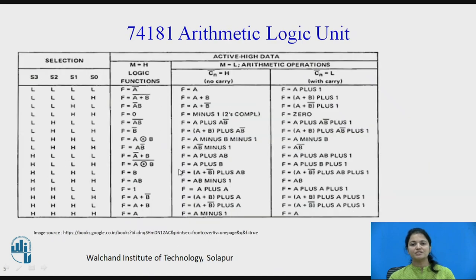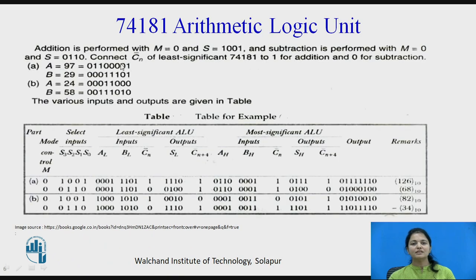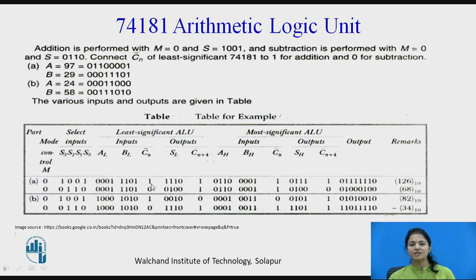In this operation, A plus B is performed. For the lower nibble, we put Cn-bar equal to 0. The table shows: mode 0 for arithmetic, selection 1, 0, 0, 1 for addition. The lower nibble of A and lower nibble of B are input, and carry is set to 1 meaning no carry, giving the output.